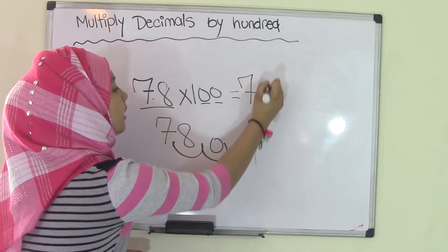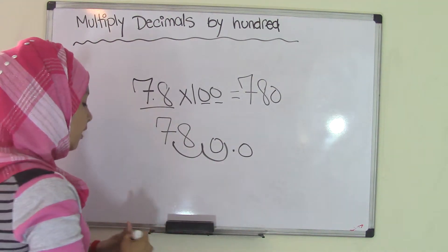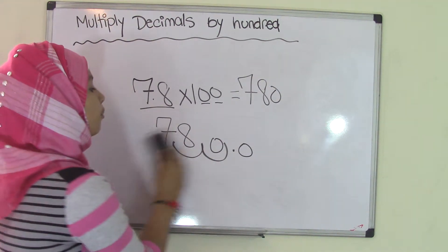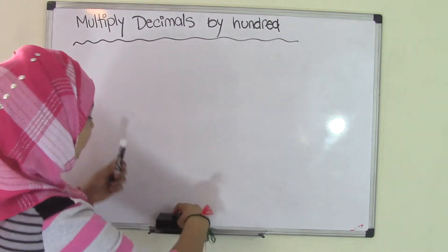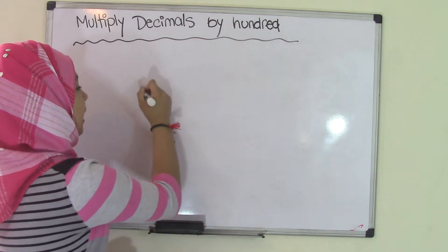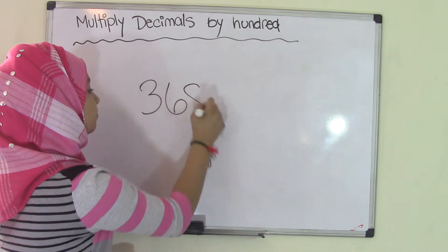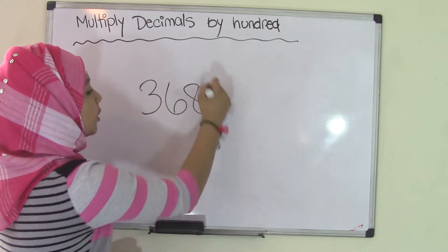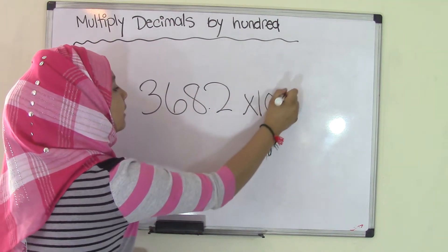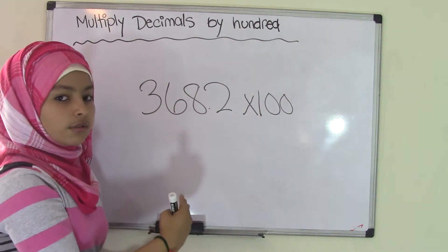Now let's move on to a larger number with more value so we can try out some harder problems. Let's say we have 368.2 times 100.